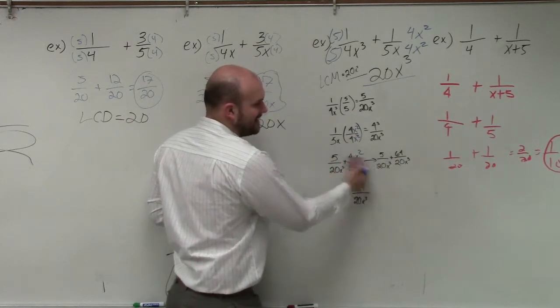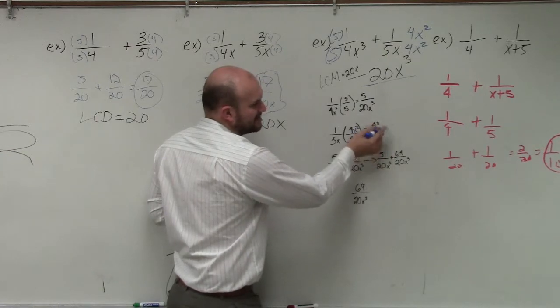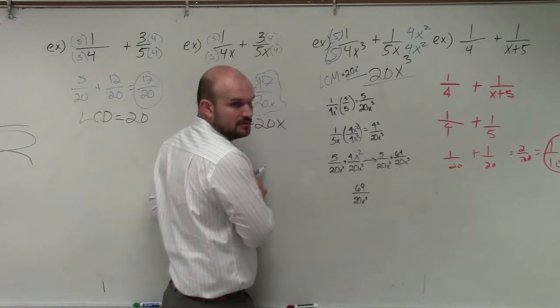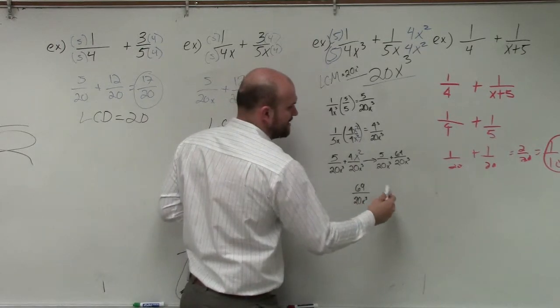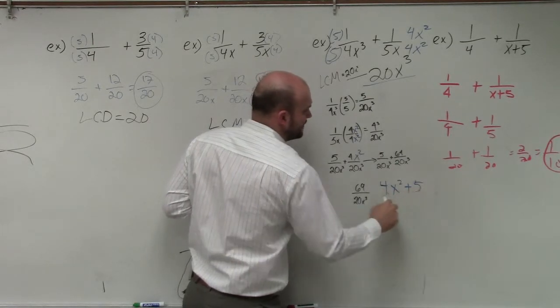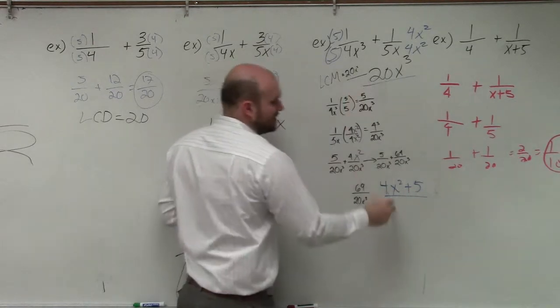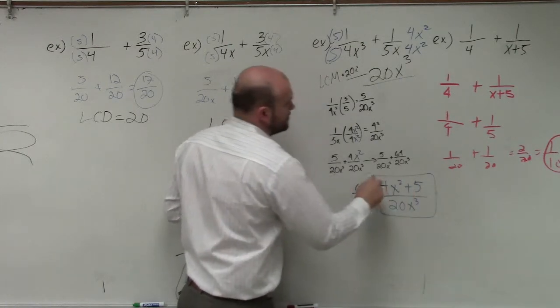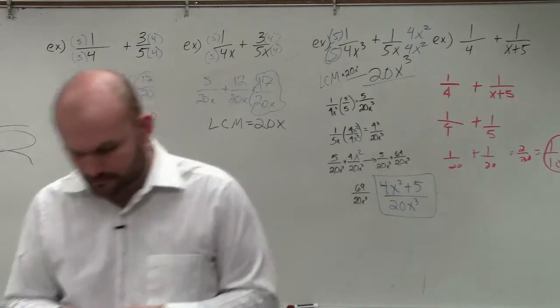You add them up. Now again, they didn't have their exponent here. So now, can you add 5 plus 4x squared? No, those aren't like terms. So my final answer would be 4x squared plus 5 divided by my common denominator, which is 20x cubed. That would be your final answer. All right.